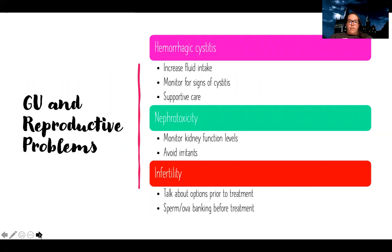For GU and reproductive problems, similar to the liver, they can have nephrotoxicity. I want to monitor kidney function levels and avoid other things that will irritate the kidneys. The kidneys love fluid and need to be supported with enough fluid. They can also have hemorrhagic cystitis — like a bleeding bladder inflammation. For these patients, I want to increase fluid intake and monitor for signs of infection, providing supportive care.